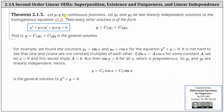This last theorem builds on superposition. Let p and q be continuous functions, and let y₁ and y₂ be two linearly independent solutions to the homogeneous equation 2.2, shown here in the blue box. Then every solution is of the form y = c₁·y₁ + c₂·y₂. That is, y = c₁·y₁ + c₂·y₂ is the general solution. Recall the superposition theorem said this y satisfied the differential equation — not that it was the general solution. But now we know it's also the general solution, as long as y₁ and y₂ are linearly independent.